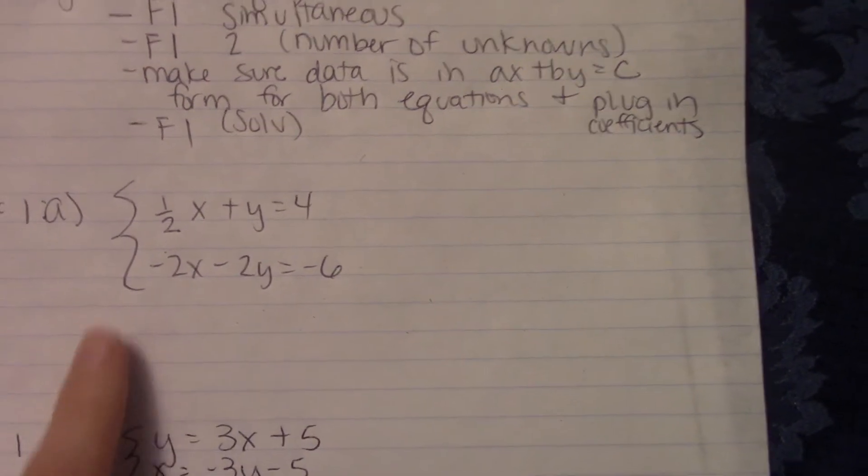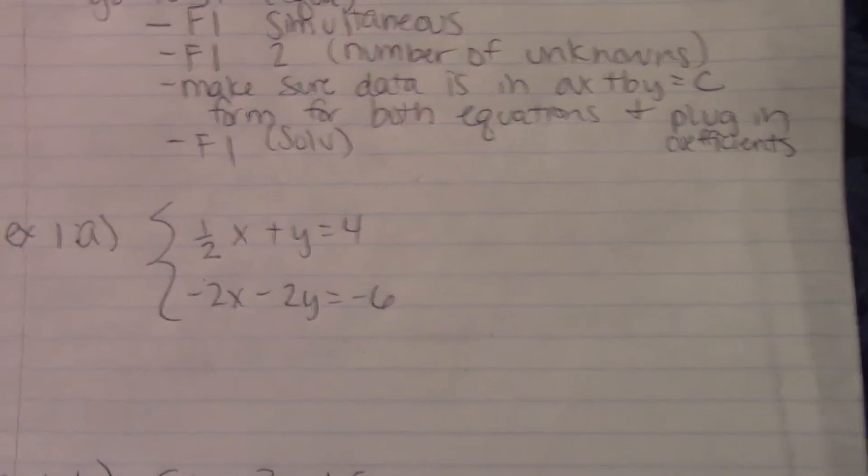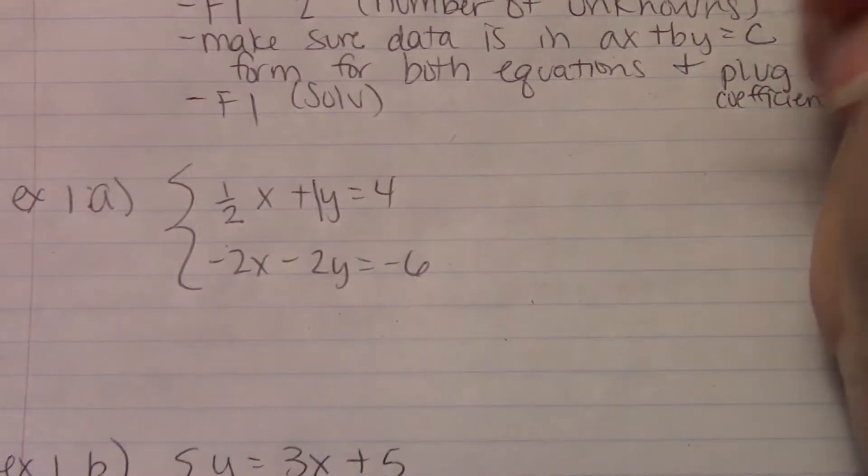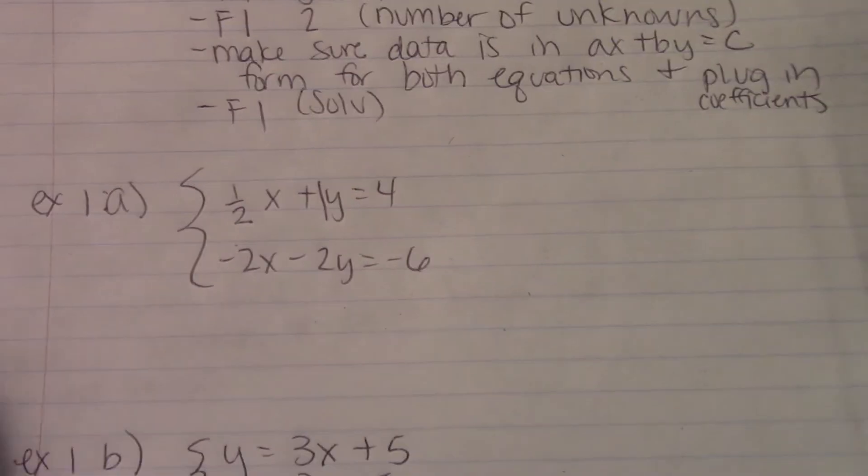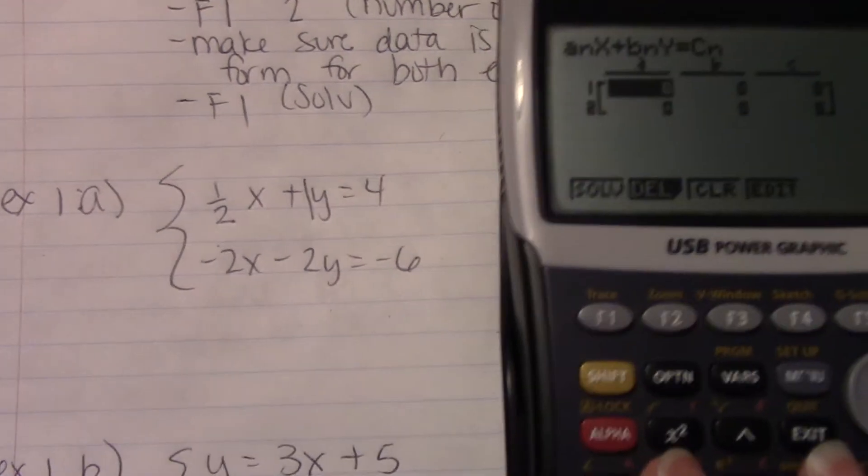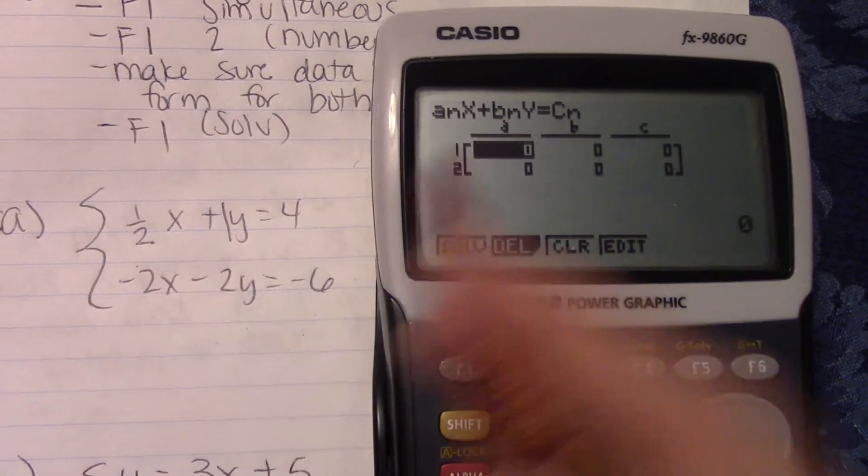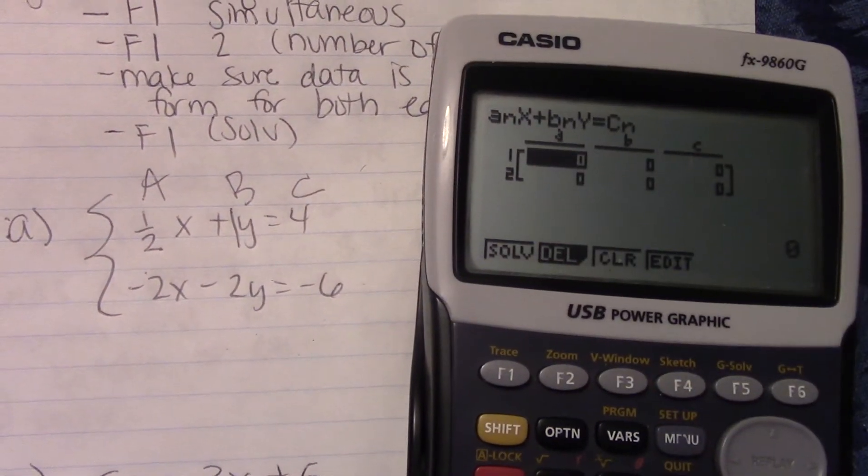So this is AX plus BY. That B is your... We have a 1 right there. We have a 1 right here equals 4. And we have negative 2X minus 2Y equals negative 6. So we need to plug these in. So our A is the ones with the X's. Our B is the one with the Y. And C is the last one.